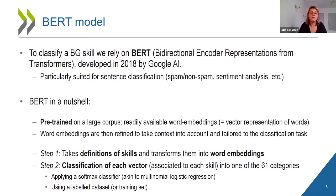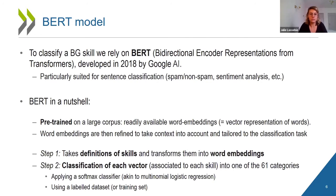The second step is to classify this definition into one of the 61 categories. This is a standard classification exercise performed using a softmax classifier, which is very similar to a multinomial logistic regression for those more familiar with econometrics.